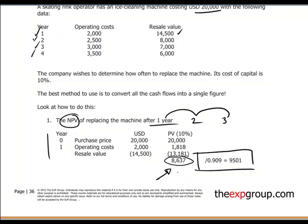The equivalent annual cost involves dividing the net present value by the annuity factor corresponding to the replacement cycle at the discount rate of 10%. For the one-year cycle, this restates the NPV as an equivalent annual cost of $9,501 — a cost that by definition repeats itself each year as we replace the asset annually.